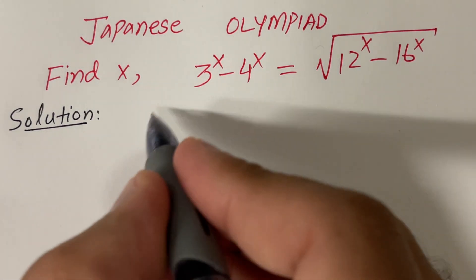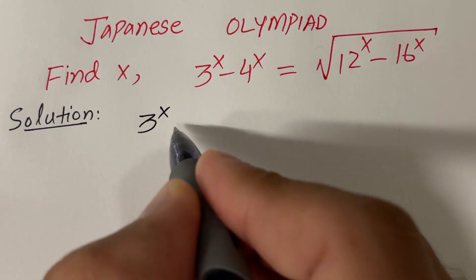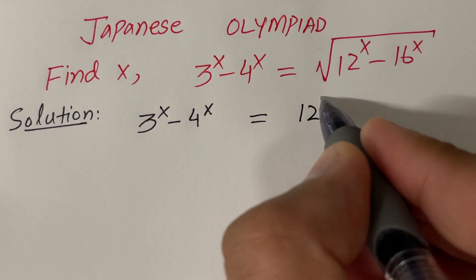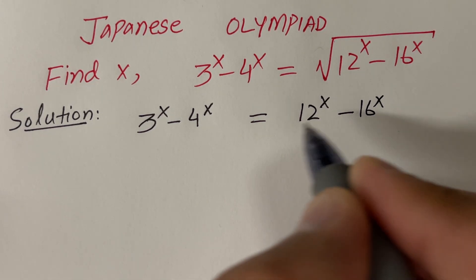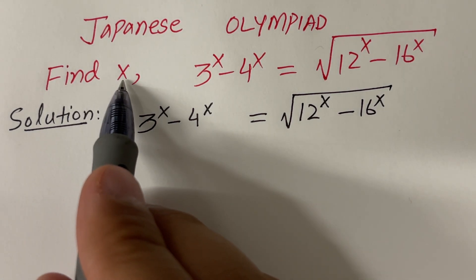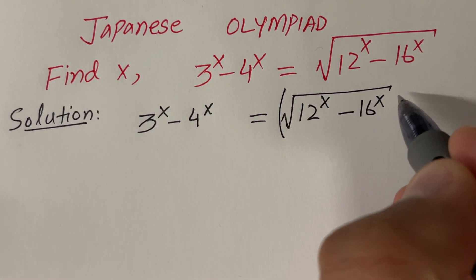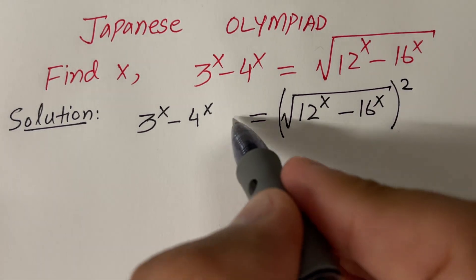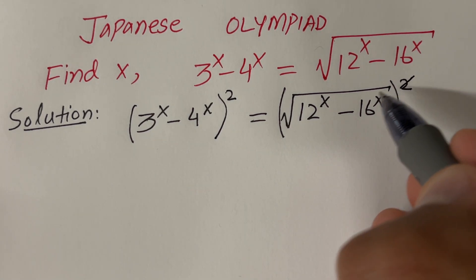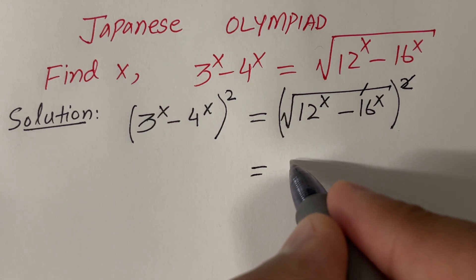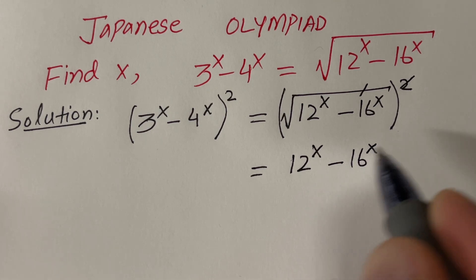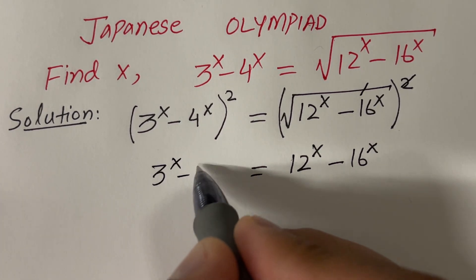First of all, let's rewrite the given equation. The given equation is 3 raised to the power x minus 4 raised to the power x, equal to the square root of 12 raised to the power x minus 16 raised to the power x. Since we want to find the value of x, we would like to get rid of this square root, which we can do by applying squares on both sides.